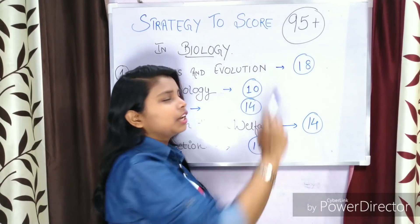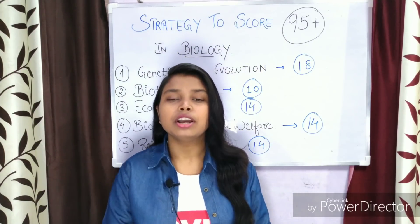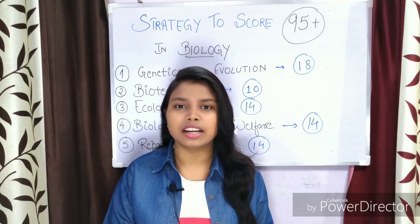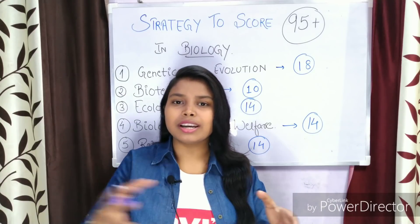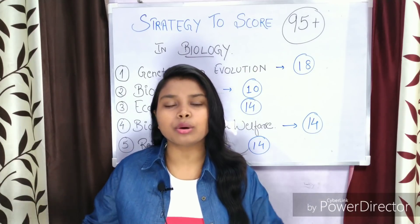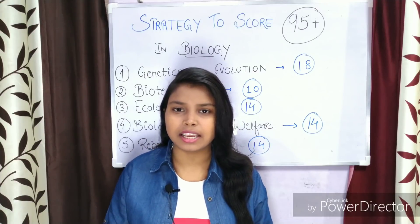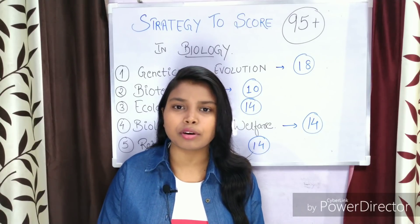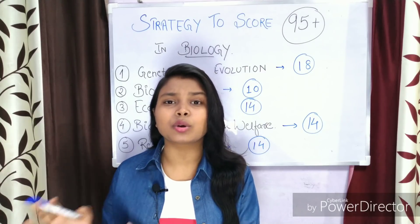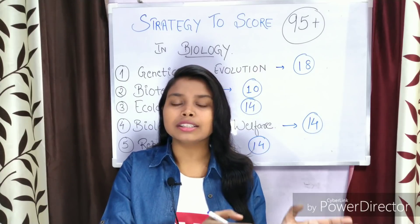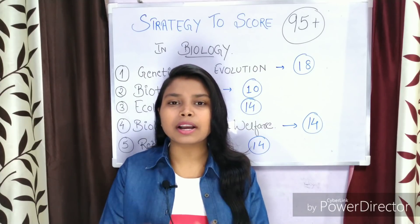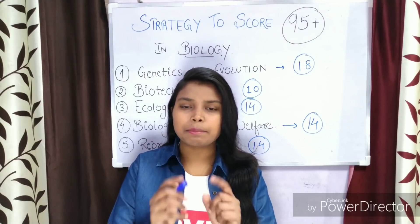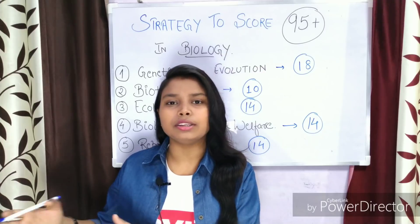Today's topic is how to score 95 plus in your biology board examination. Generally what happens is that children don't know which unit to start from. If you start from unit 1 and go to unit 5, you may not have enough time. If you haven't started anything until now, please follow this strategy. If you follow these tips step by step, you will score 95 plus. Let's start with the first trick: weightage according to units.